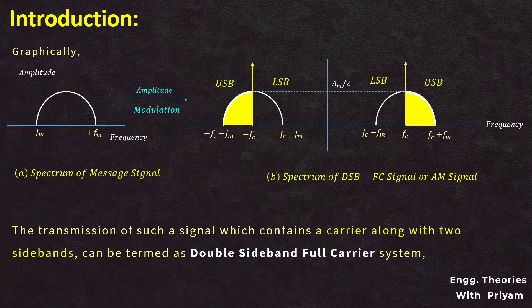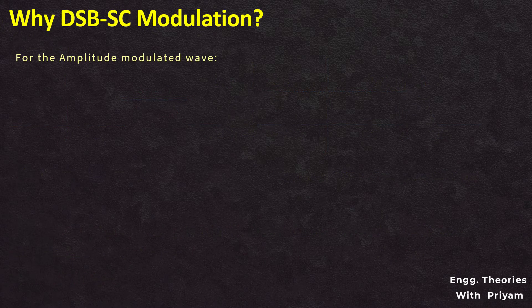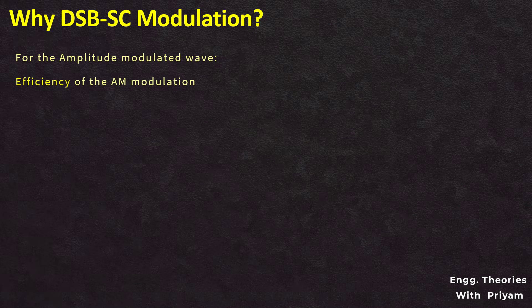The transmission of a signal which contains a carrier signal along with the two sidebands can be termed as a double sideband full carrier system, or simply DSBFC system. This transmission of the message signal is not efficient, because the efficiency of the amplitude modulated signal η is defined as k² divided by (2 + k²).